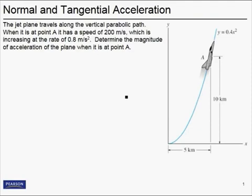In this problem we're going to consider a way that we can write acceleration using normal and tangential components. We've got a jet plane traveling along a parabolic path, and we know the equation that describes that path. When the jet is at point A, we know it has a speed of 200 meters per second, and that speed is increasing at a rate of 0.8 meters per second squared. Our goal is to determine the magnitude of acceleration of the plane at point A.